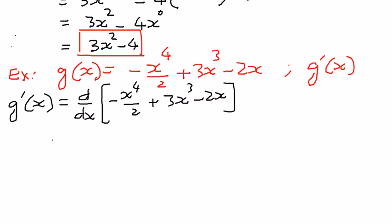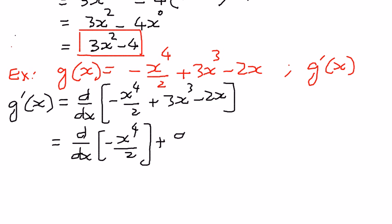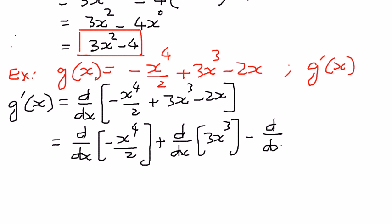So the way to solve this is as follows. The derivative g prime of x is going to be equal to d by dx of this whole function: negative x to the power of 4 divided by 2, plus d by dx of 3x to the power of 3, minus d by dx of 2x.